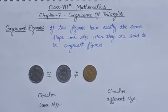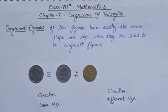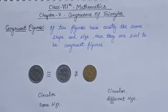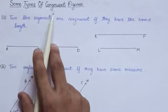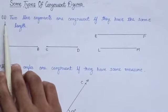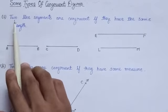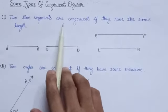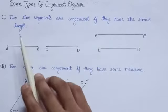It is clear that two figures are said to be congruent if they have exactly the same shape and same size. Now we will study about some types of congruent figures. First, when will we say two line segments are congruent? Two line segments are congruent if they have the same length.